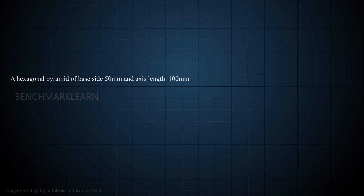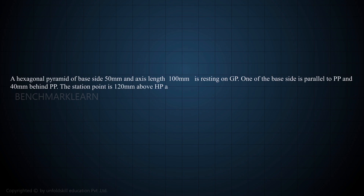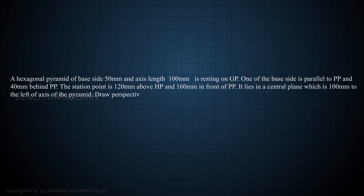A hexagonal pyramid of base side 50 mm and axis length 100 mm is resting on GP, with one of the base sides parallel to PP and 40 mm behind PP. The station point is 120 mm above HP and 160 mm in front of PP. It lies in a central plane which is 100 mm to the left of the axis of the pyramid. Draw the perspective view of the pyramid.